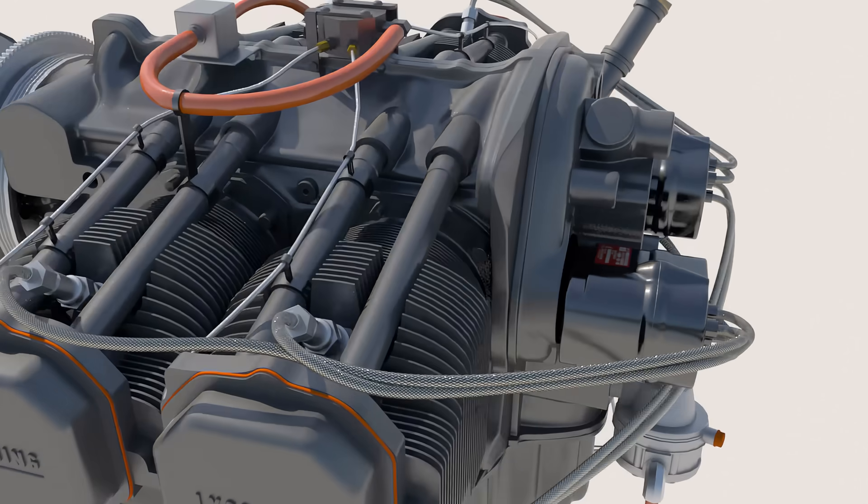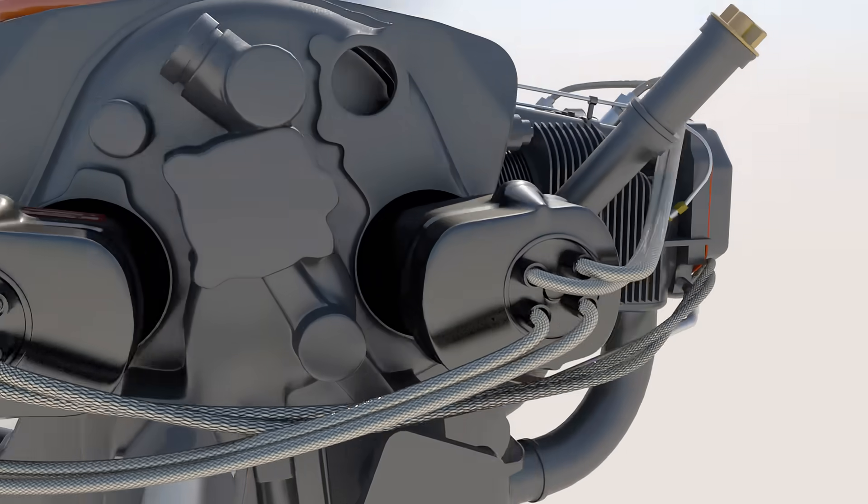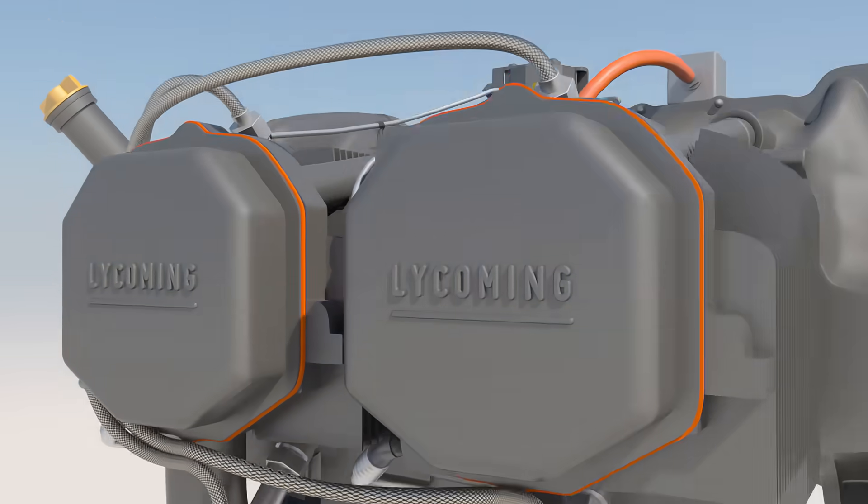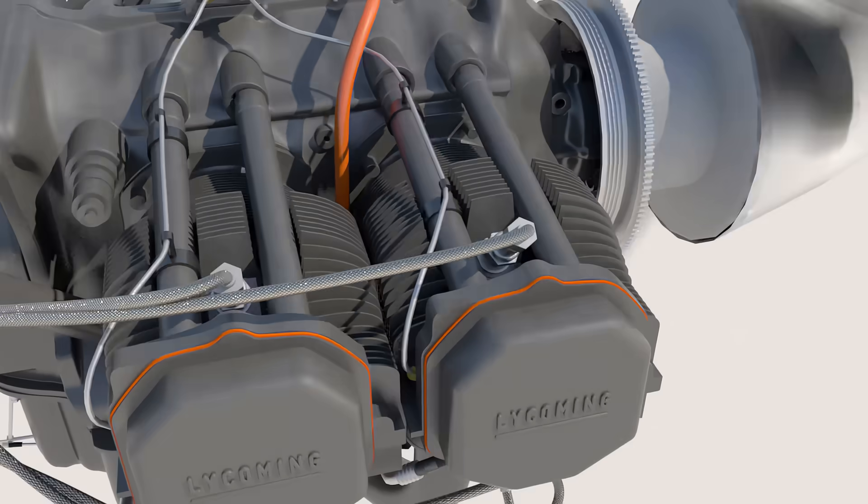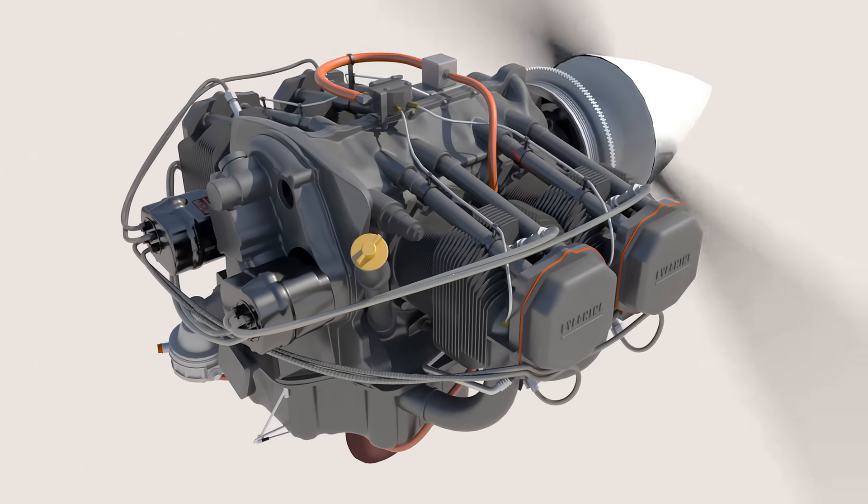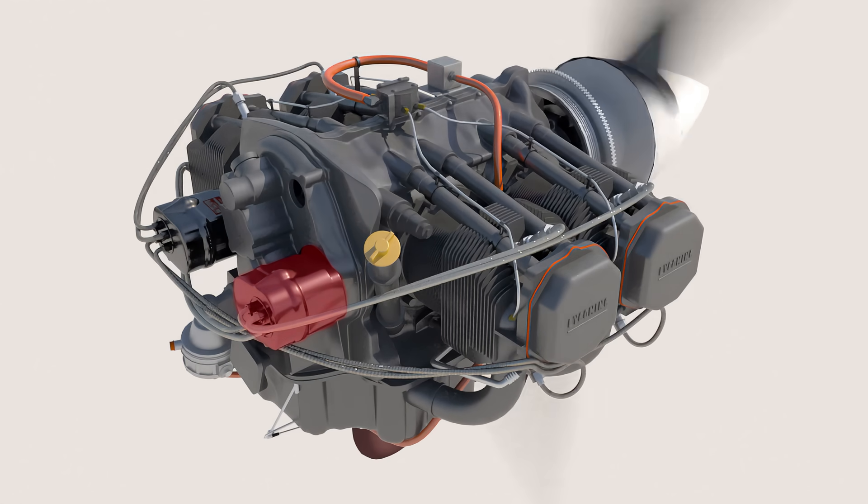Most airplanes have two magnetos, multiple sets of wires, and two spark plugs per cylinder in order to increase efficiency and reliability of the system. If one magneto fails or one spark plug fails, the engine will still run. However, power output will be slightly reduced as the engine is operating less efficiently.